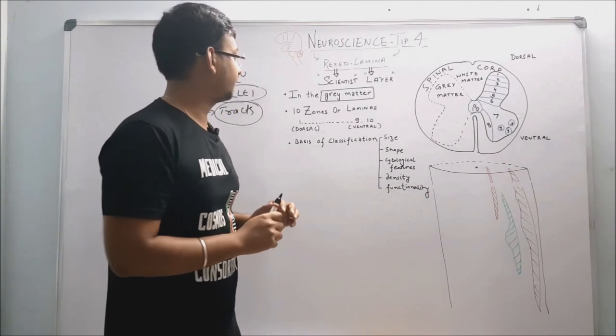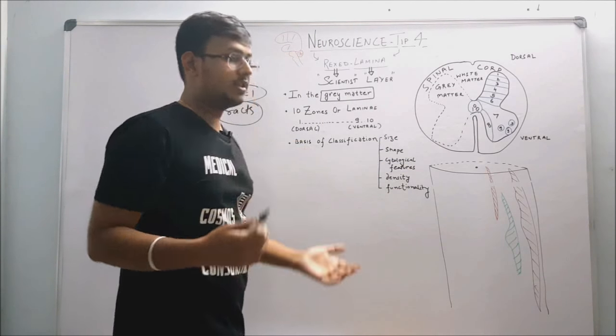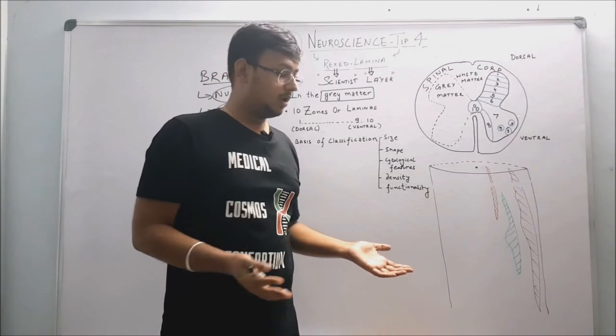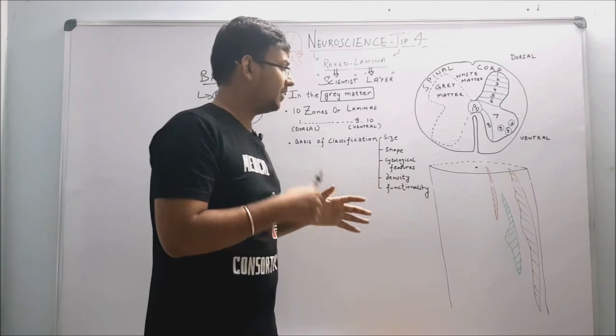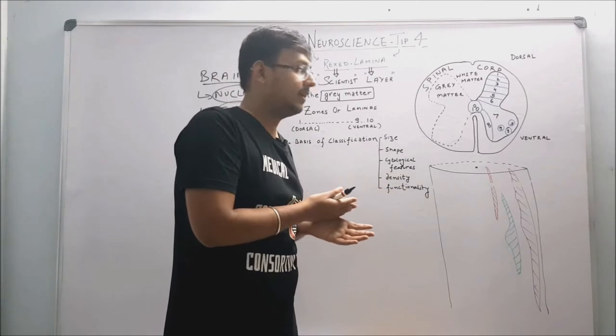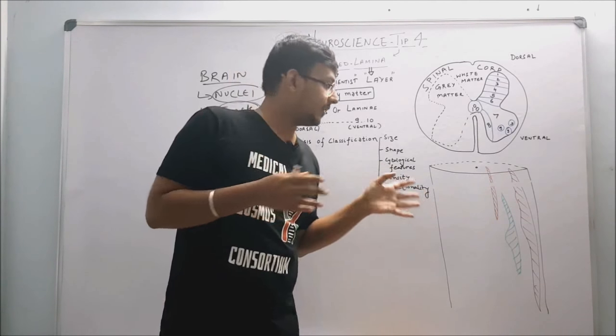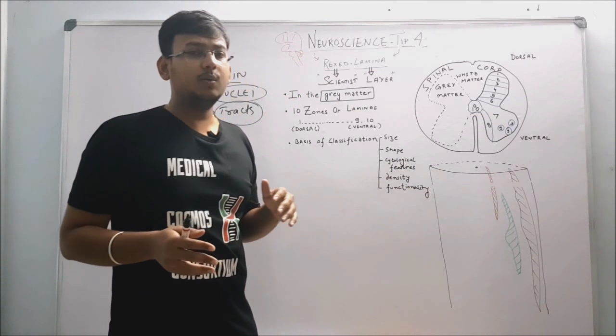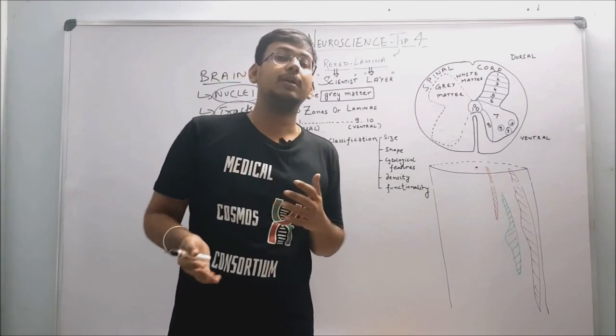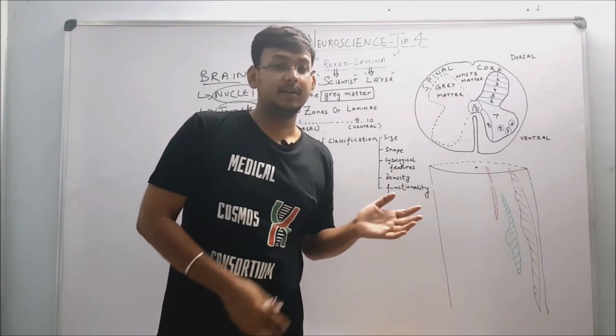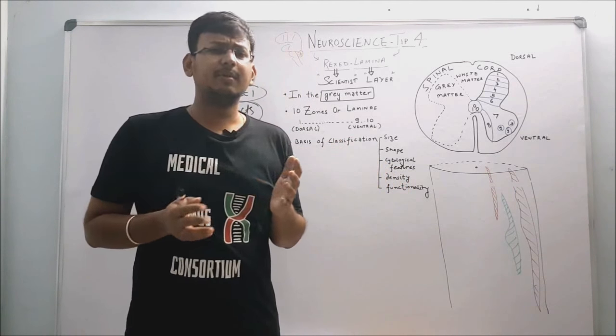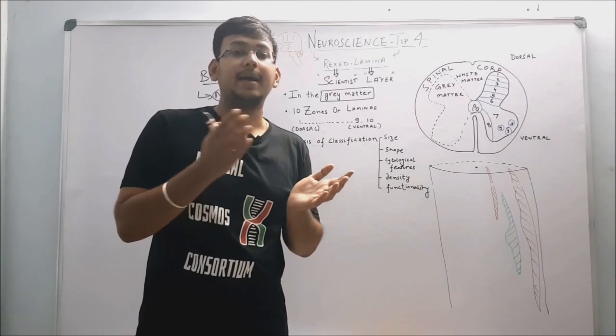So what is the basis of classification? We have to know now: why are we studying these laminae? Why is there a hoax of understanding about lamina? Basically, when we deal about SCI - that is spinal cord injuries - or when we study about CPG, that is central pattern generators - we'll discuss this in other Neuroscience Tip video.